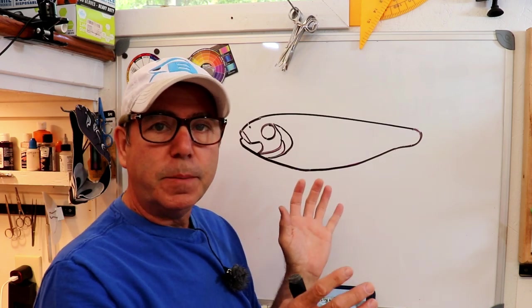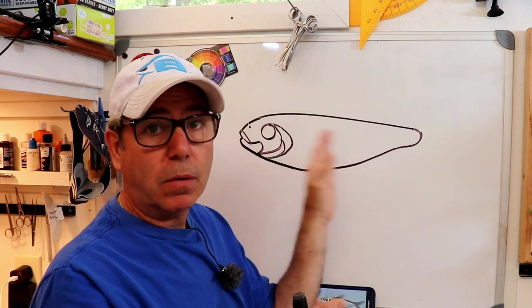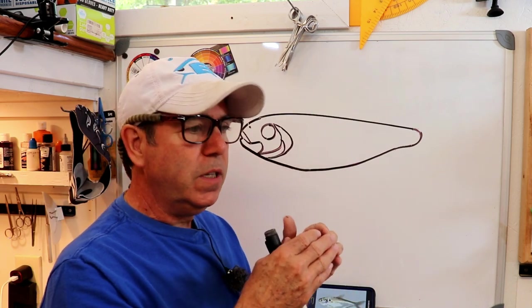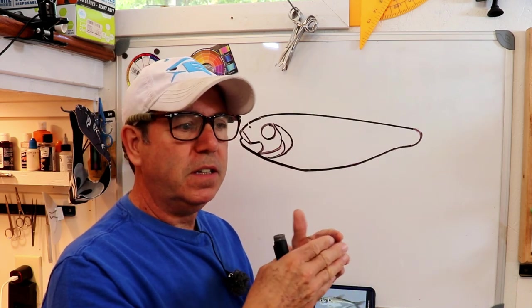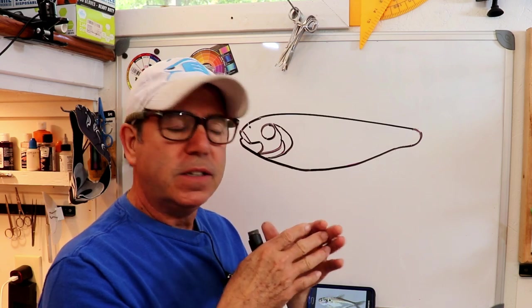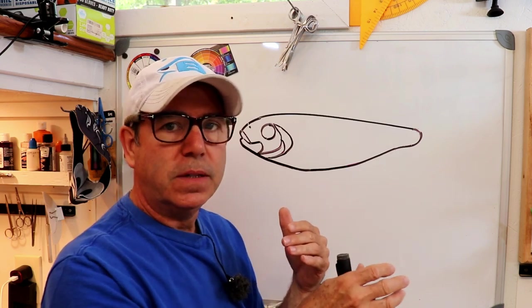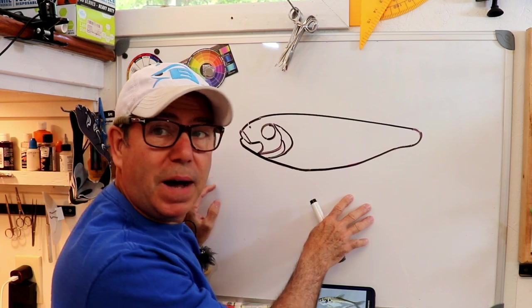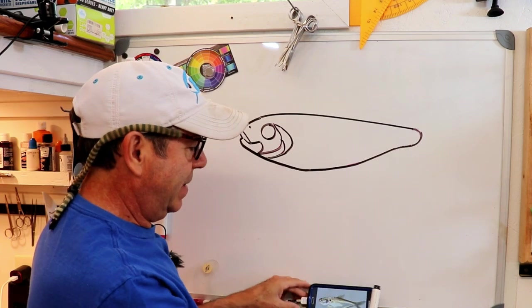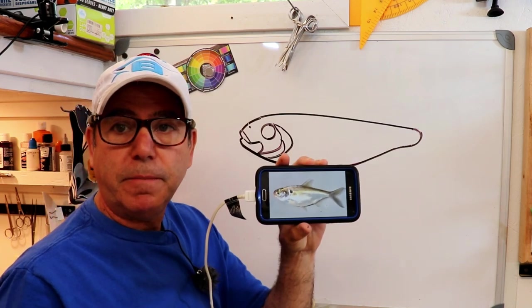To cheat the design a little bit, you can put a break in it or a couple of breaks in it. You don't really want full movement, just a little bit of a break in the body so it tends to want to turn. I'm modeling this body shape after a threadfin.